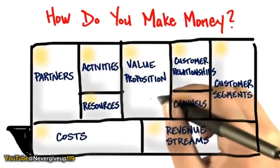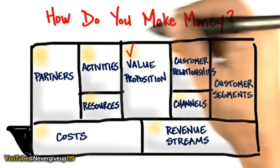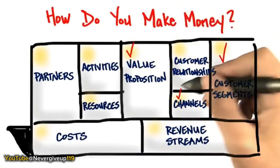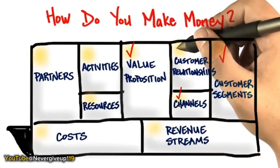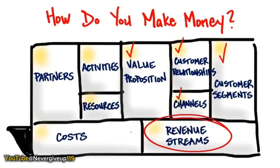Today we're going to talk about revenue models — very simply, how does your company make money? In our last lectures, we talked about value proposition, customer segments, distribution channels, customer relationships, and get, keep, and growing customers. But today, we're going to be talking about revenue streams: how is it that you make money?